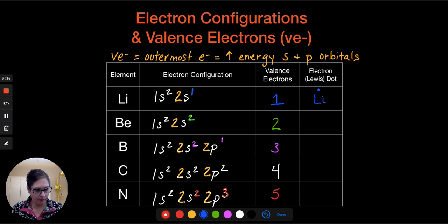For beryllium, it has two dots. So we would start the first one at the top of the element, and then the next one, I just go clockwise, would be on the side. And so we fill one on each side first, all 4 sides first.